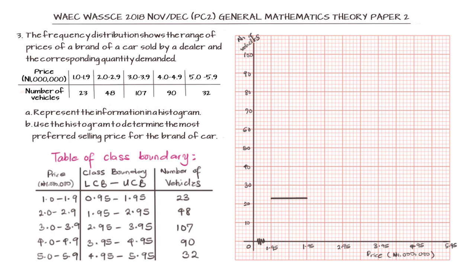Then 1.95 to 2.95 is being plotted against 48. With gradation of 2, 48 will be just before 50. Then 2.95 to 3.95, and then 90 to be plotted against 3.95 to 4.95. Then 32 is located here, plotted against 4.95 and 5.95.